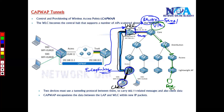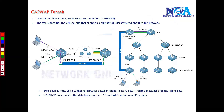The same process happens in reverse when the packet returns. The returning traffic travels back through the CAPWAP tunnel to the WLC, which re-encapsulates it and sends it back through the tunnel to the access point, which delivers it to the end client. This is a back-end process where all user traffic — including 802.11-related messages and client data — is encapsulated within the CAPWAP tunnel.